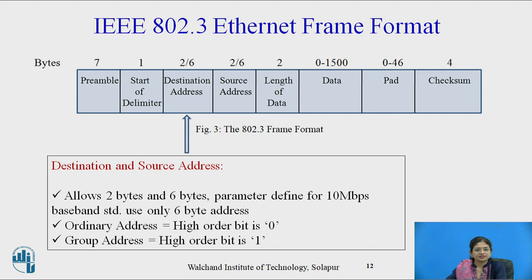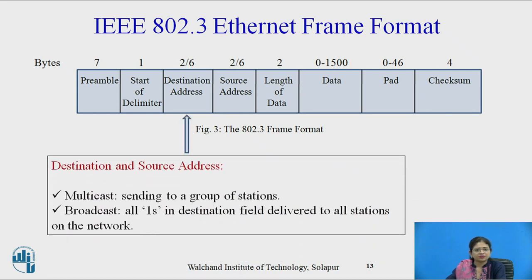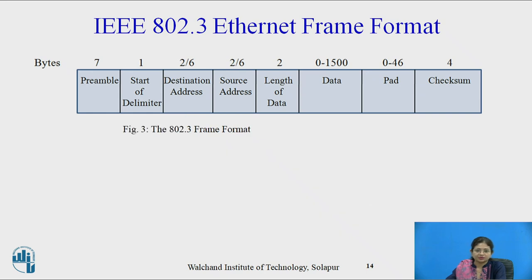The next fields are destination address and source address, which allow 2-byte or 6-byte addressing. The parameters defined for the 10 Mbps baseband standard use only 6-byte addresses. These provide ordinary and group addresses. When the MSB (high-order bit) is 0, it is an ordinary address; when it is 1, it is a group address. There are two types: multicast and broadcast.